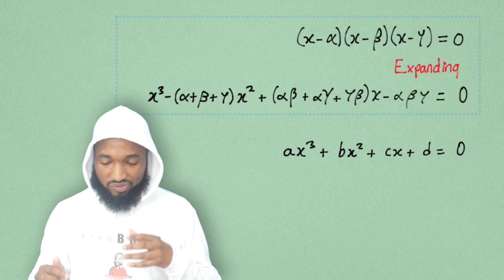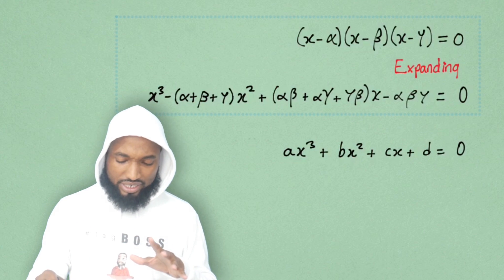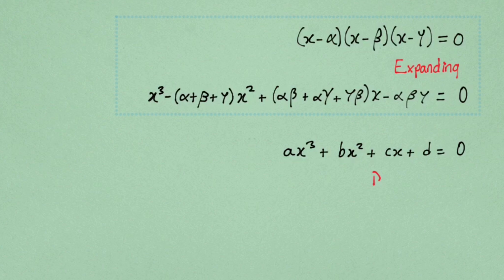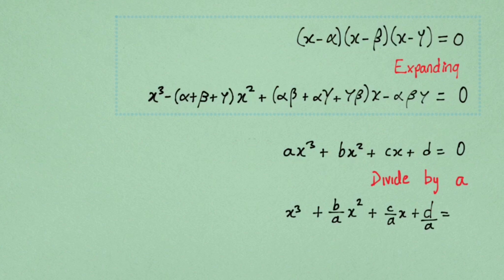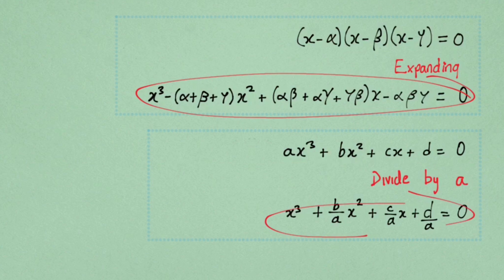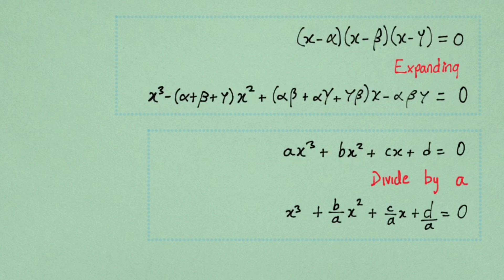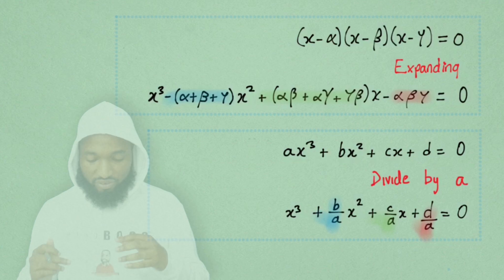Here are the equations where a, b, c and d are your coefficients. But we don't want a, so you're going to divide by a and you'll end up with this. Now you can compare the two expressions and compare the coefficients — you see what I have nicely highlighted there: that blue, that green, that red.